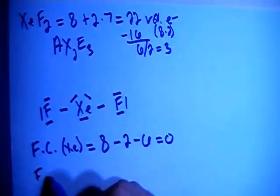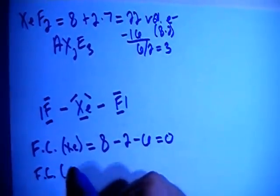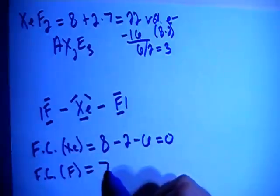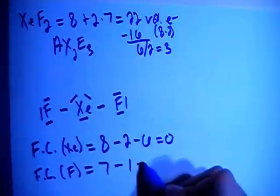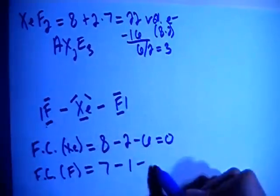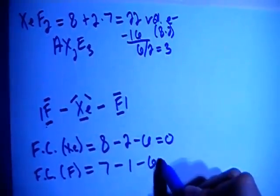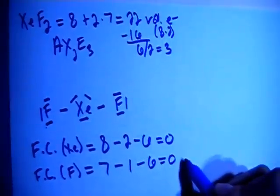And then the formal charge on each of the fluorines is going to be 7 valence brought in for each, minus 1 bond for each fluorine, minus 2, 4, 6 non-bonding electrons on each fluorine as well, giving you a formal charge of 0.